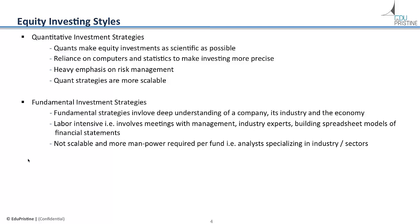Quantitative investors rely heavily on risk management to construct their portfolios, often using an optimizer and a risk model to target desired risk-reward characteristics, taking into account the covariance structure of signals or factors. They rebalance their portfolio in a disciplined way to maximize the reward-to-risk ratio, taking into account transaction costs. Because of their heavy reliance on computers and automation, quantitative strategies are more scalable — a small team of two people can run a billion dollars across two or more portfolio strategies.